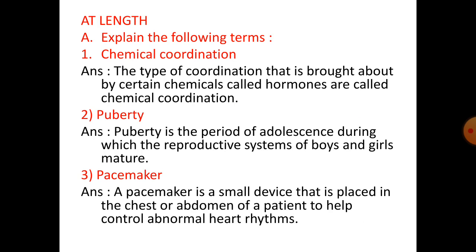At length section, number A: explain the following terms. Chemical coordination: the type of coordination that is brought about by certain chemicals called hormones is called chemical coordination. Number two, puberty: puberty is the period of adolescence during which the reproductive system of boys and girls matures.